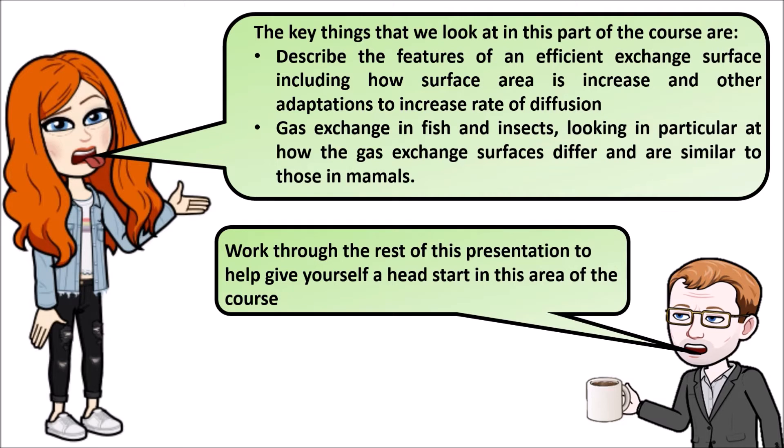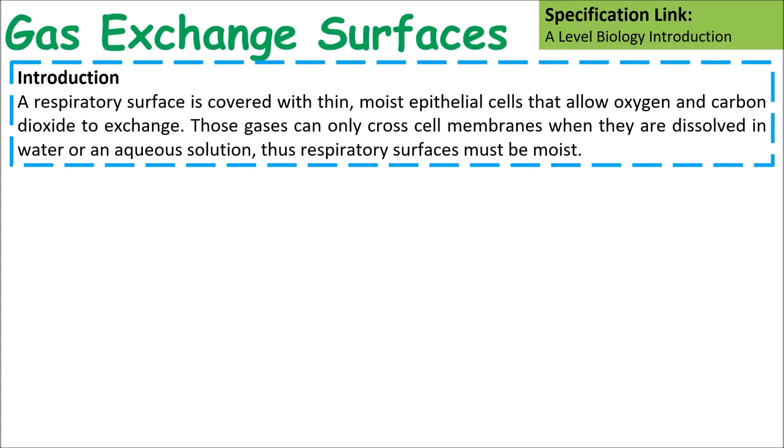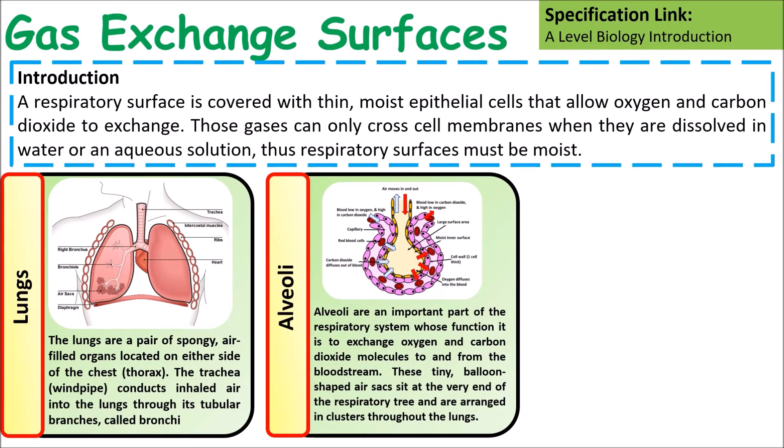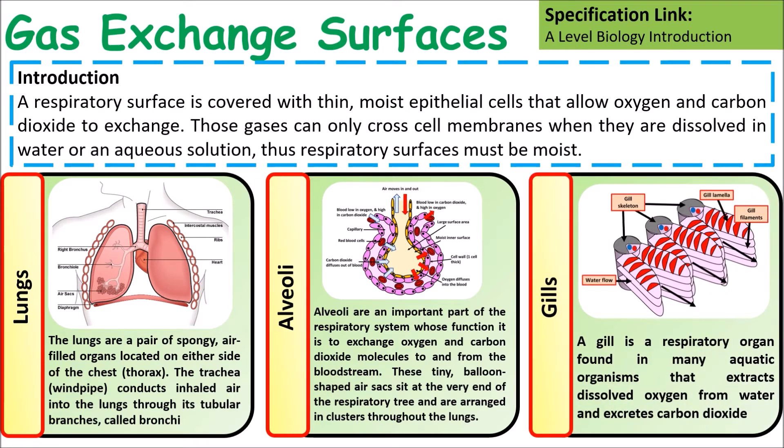The rest of this presentation will look at a few things that will give you a head start. A respiratory exchange surface is covered with thin, moist epithelial cells that allow oxygen and carbon dioxide to exchange quickly. The key areas we need to look at are the lungs, the alveoli and the gills.